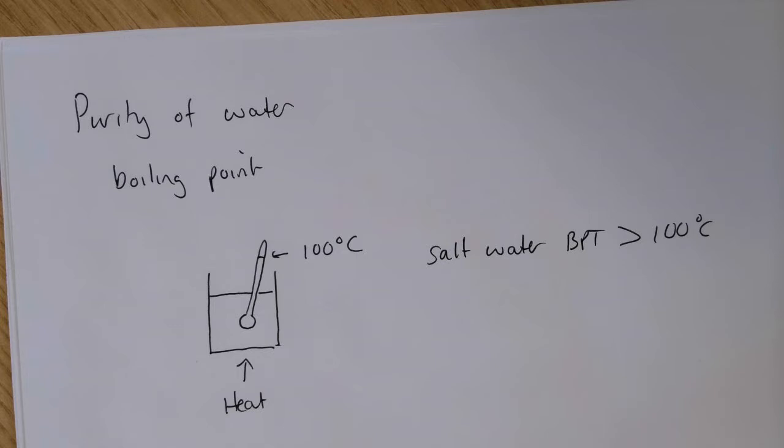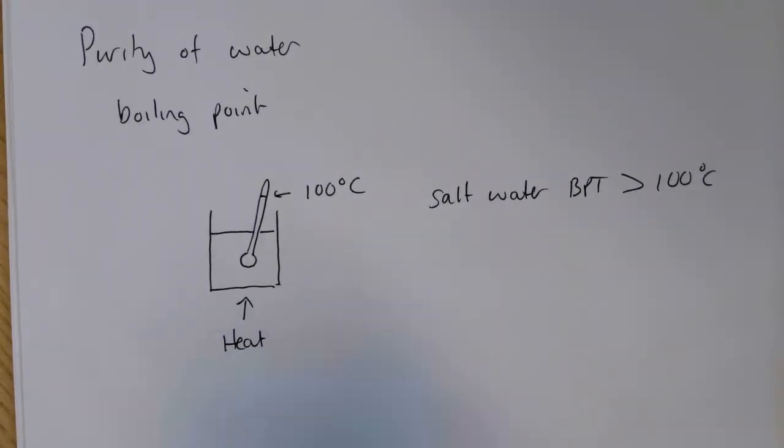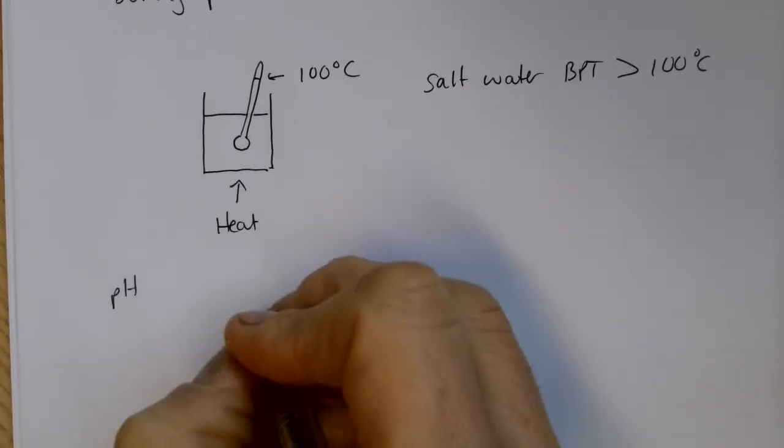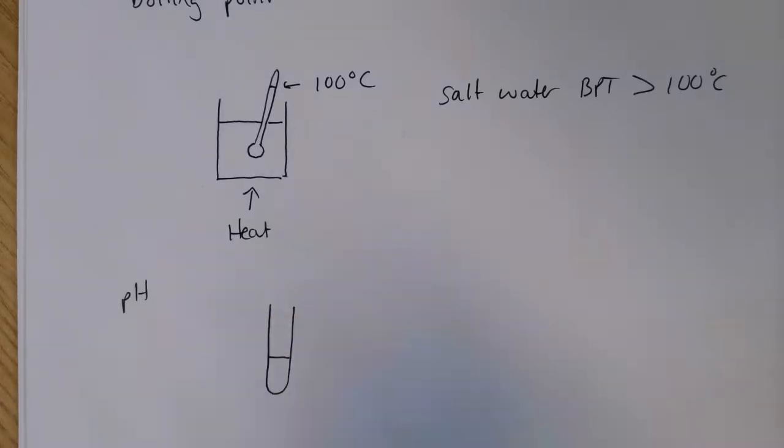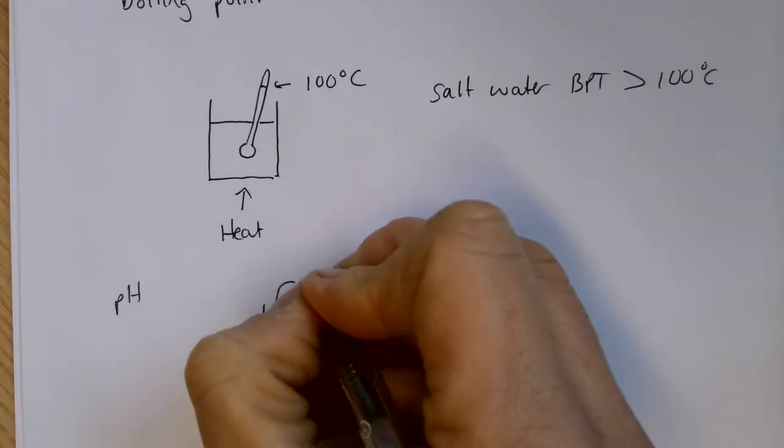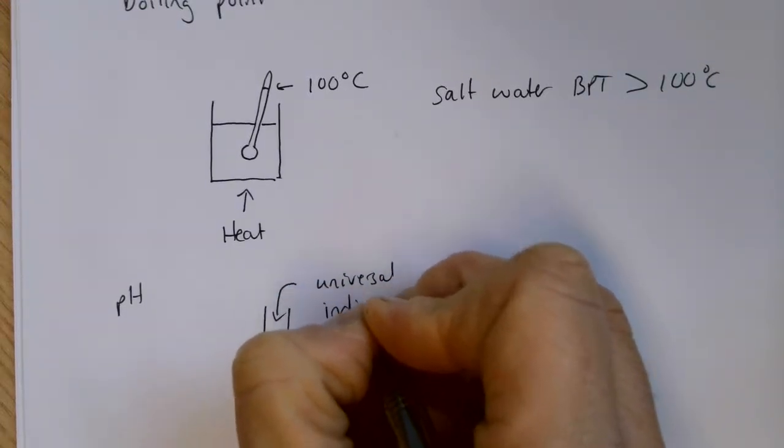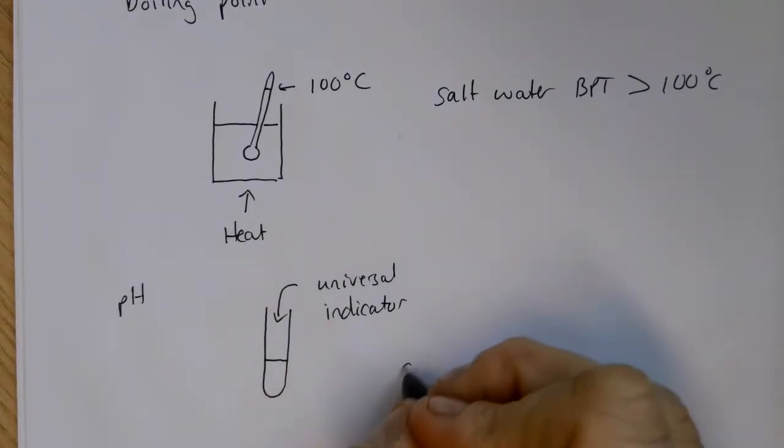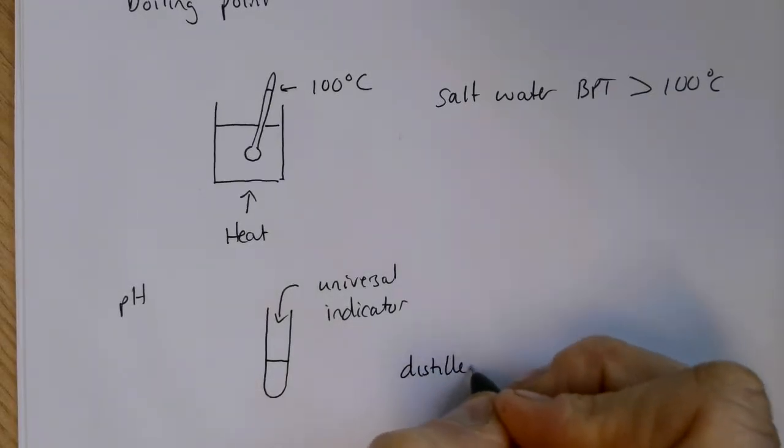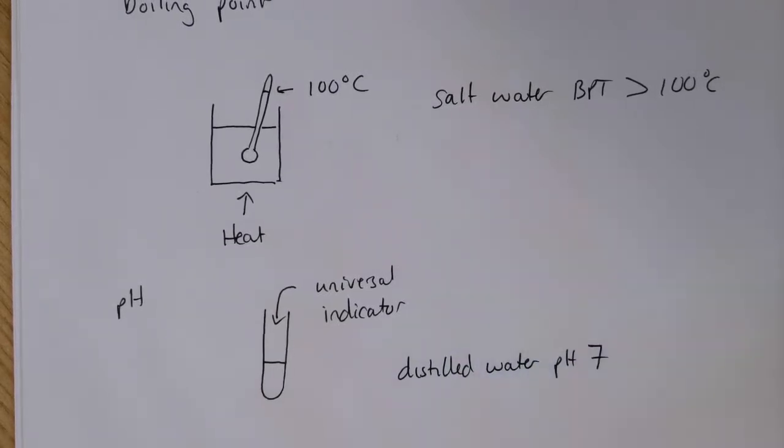We can also have a look at the pH of the water. The way that we would do that is to take our water sample, put it into a test tube, and add some universal indicator. We would expect distilled water to have a pH of 7, and therefore we would expect the universal indicator to turn green.